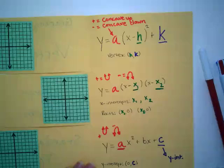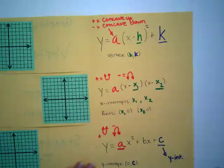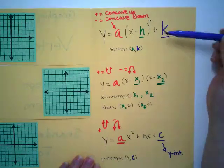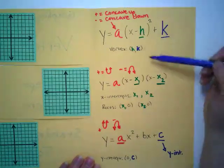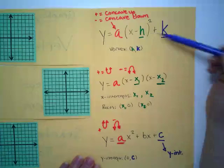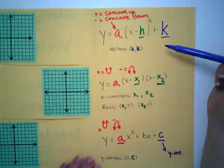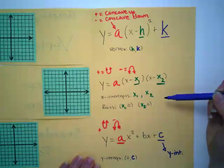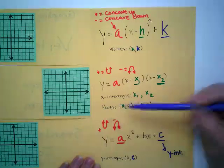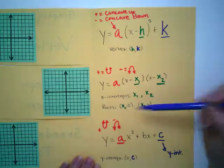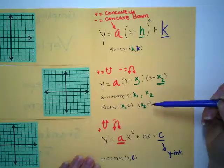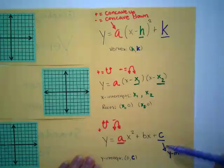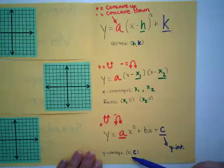For each of these forms, I listed the easiest information we get when looking at a quadratic written in that form. For vertex form, you can easily pull the coordinates for the vertex: H comma K. In intercept form, we can easily pull out the coordinates for the X-intercepts or roots: X1 comma 0 and X2 comma 0. And in standard form, we can easily pull the coordinates for the Y-intercept: 0 comma C.